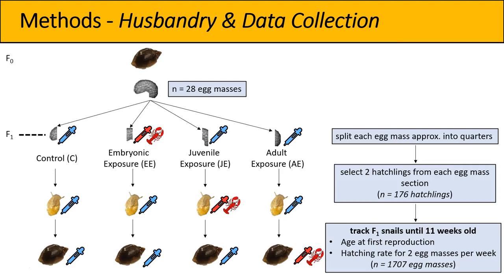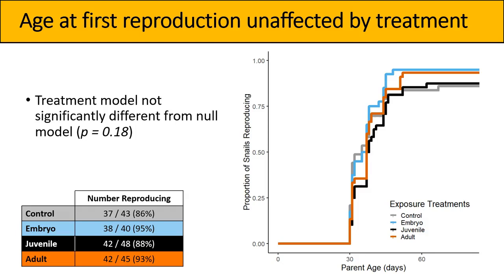I sampled two egg masses per snail per week to assess hatching rate, giving me about 1,700 total egg masses across my four treatment groups. First, there was no impact of treatment on age at first reproduction. A likelihood ratio test comparing the null model with the treatment model showed they were not significantly different. The majority of snails across treatments reproduced, with no real difference in the rate at which they started reproducing. The color scheme throughout: gray represents control snails, blue represents embryo exposure, black represents juvenile exposure, and red represents adult exposure.